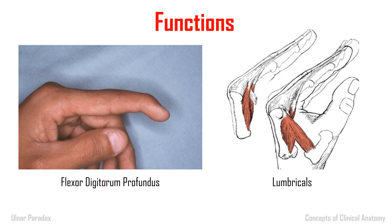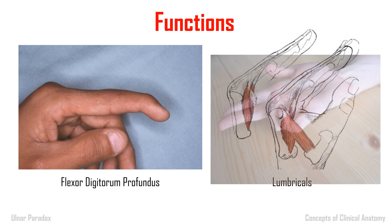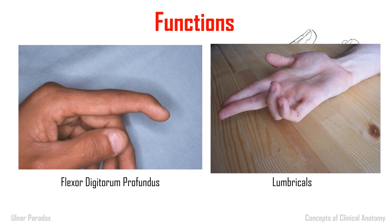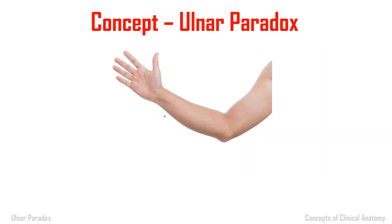If there is any injury to these muscles — paralysis of the flexor digitorum profundus — there will be weakness in flexion of the distal interphalangeal joint. For the lumbricals, when paralyzed, the action is reversed: flexion at the metacarpophalangeal joint becomes extension, and extension at the interphalangeal joint becomes flexion. This ultimately leads to claw hand.